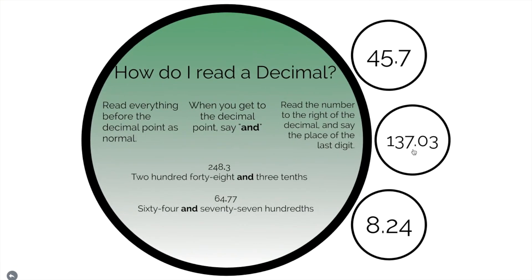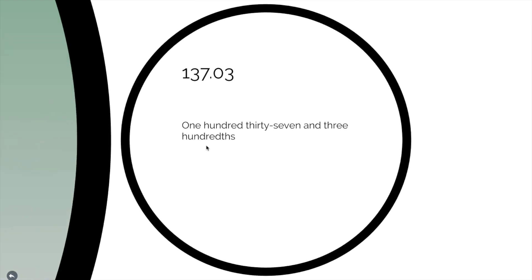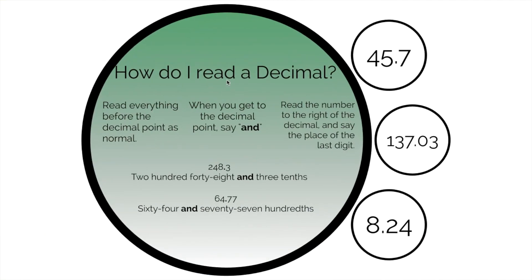Now this one. This one looks scary. But it's not. This one's 137 and three hundreds. Because this three is not in the tenths place. It's in the hundreds place. 137 and three hundreds. All right. That didn't look so bad. That was easy, right? That was easy.